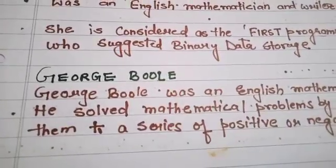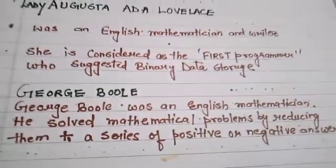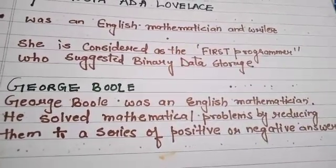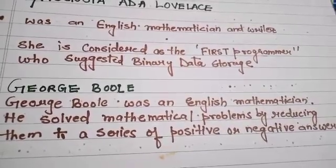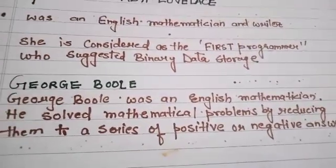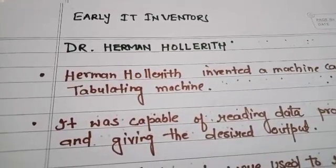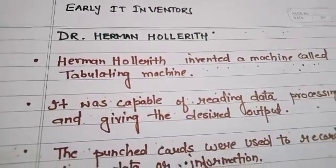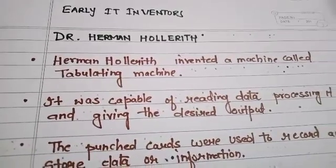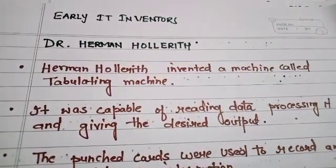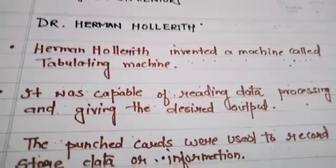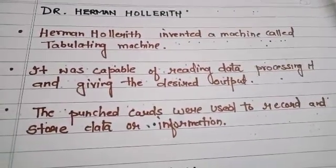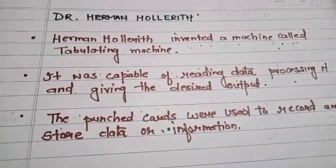George Boole was an English mathematician. He solved mathematical problems by reducing them to a series of positive or negative answers. Dr. Herman Hollerith invented a machine called the tabulating machine, and it was capable of reading data, processing and giving the desired output. The punch card was used to record and store data or information.